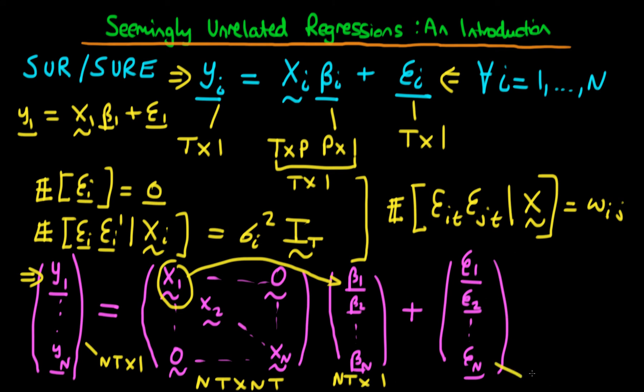And then finally, the error vector here has the same dimensions as the dependent variable vector. It's just NT by 1. So it's not difficult to see how, by stacking each of the observations on top of one another and forming a particular matrix, which is filled with the matrices of the independent variables, we can actually represent our system of equations for each individual in terms of a single matrix equation.